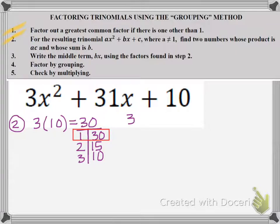So I'm done with step 2. Now I'm on to step 3. So my trinomial is 3x squared plus 31x plus 10, but I want to rewrite it as four terms. So the middle term, 31x, instead of 31x, I write it as 1x plus 30x. And remember, I'm using those two factors from my list in step 2, the 1 and the 30.